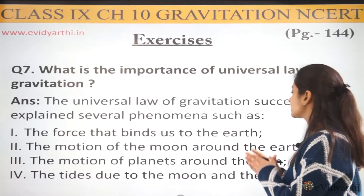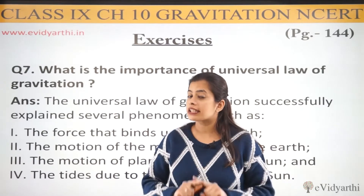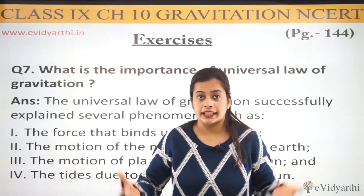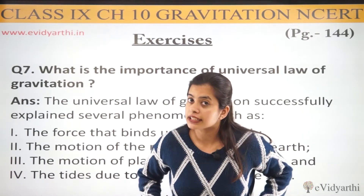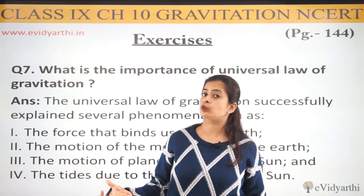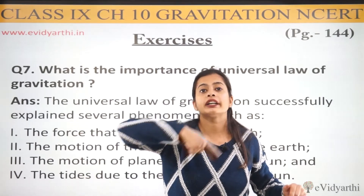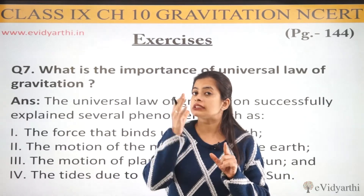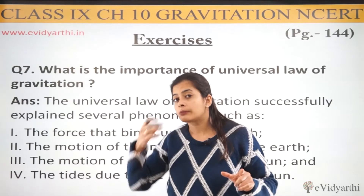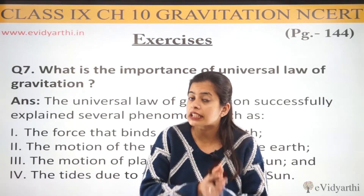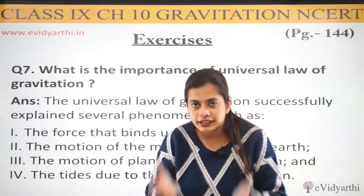Then, the motion of planets around the sun. Similarly, just as our moon orbits the earth, all of our planets — including our own planet Earth — orbit the sun. This is why our entire solar system appears as one structure. Everyone is revolving in their own orbit around the sun. Why? Because of the sun's force of attraction — all the planets are bound by the sun's gravitational force. So this is also an application of the universal law of gravitation.